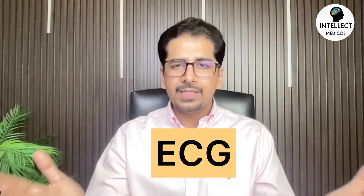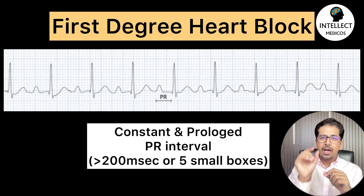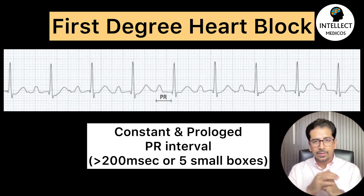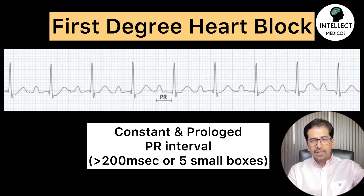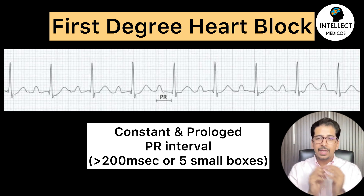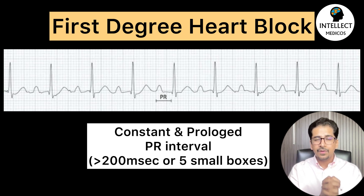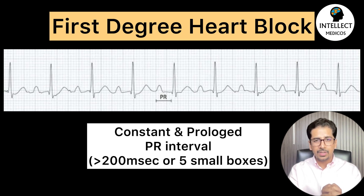Coming on to how to evaluate — the first and foremost investigation is always the ECG. For first-degree heart block, the patient's ECG shows a constant and prolonged PR interval. Every impulse generated from the SA node is transmitted to the ventricles, but there is increased delay at the level of the AV node. Hence, the PR interval is more than 200 milliseconds — it is increased but constant.